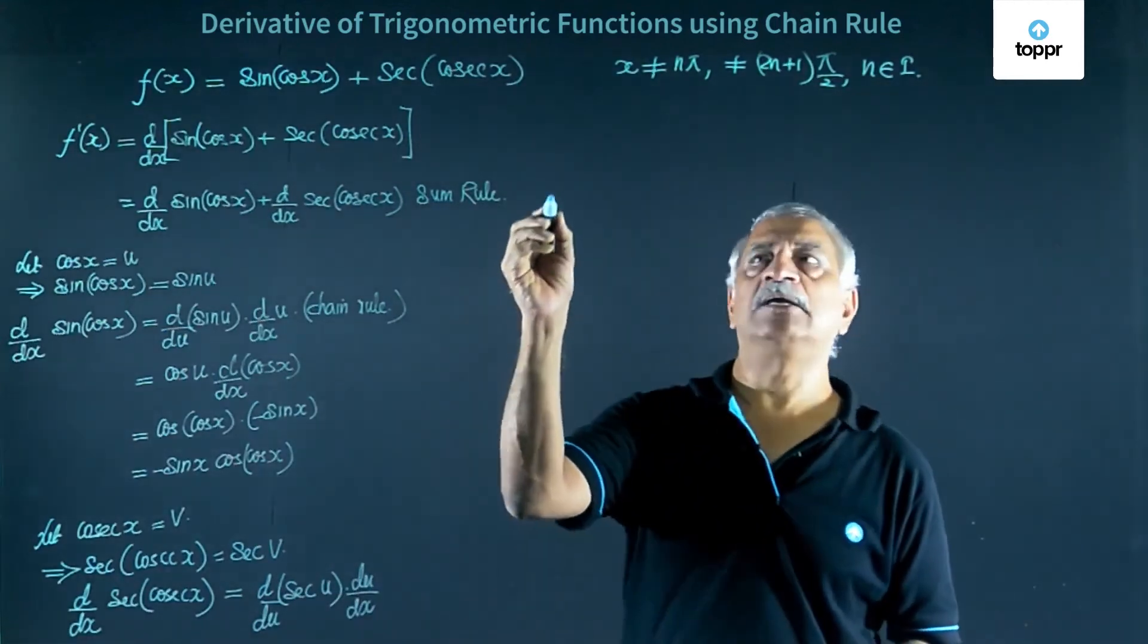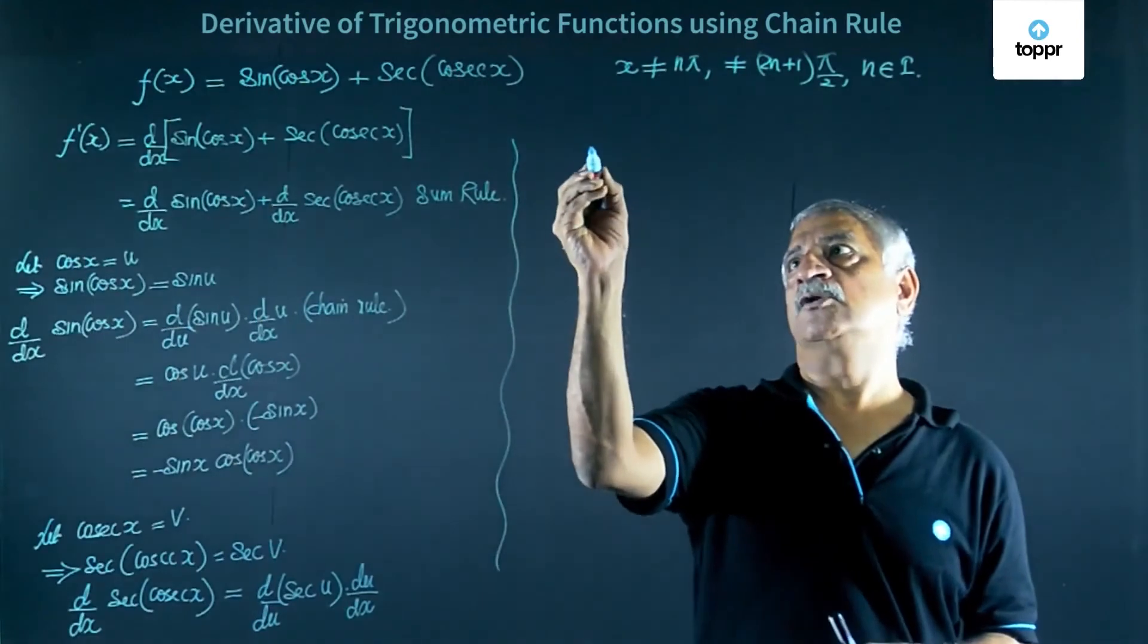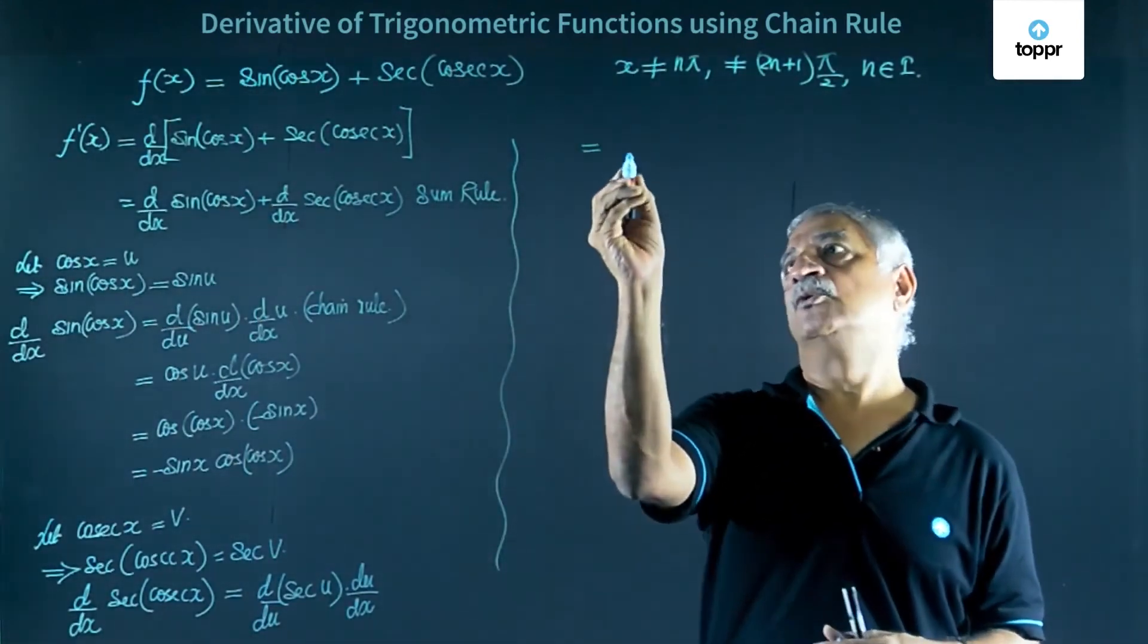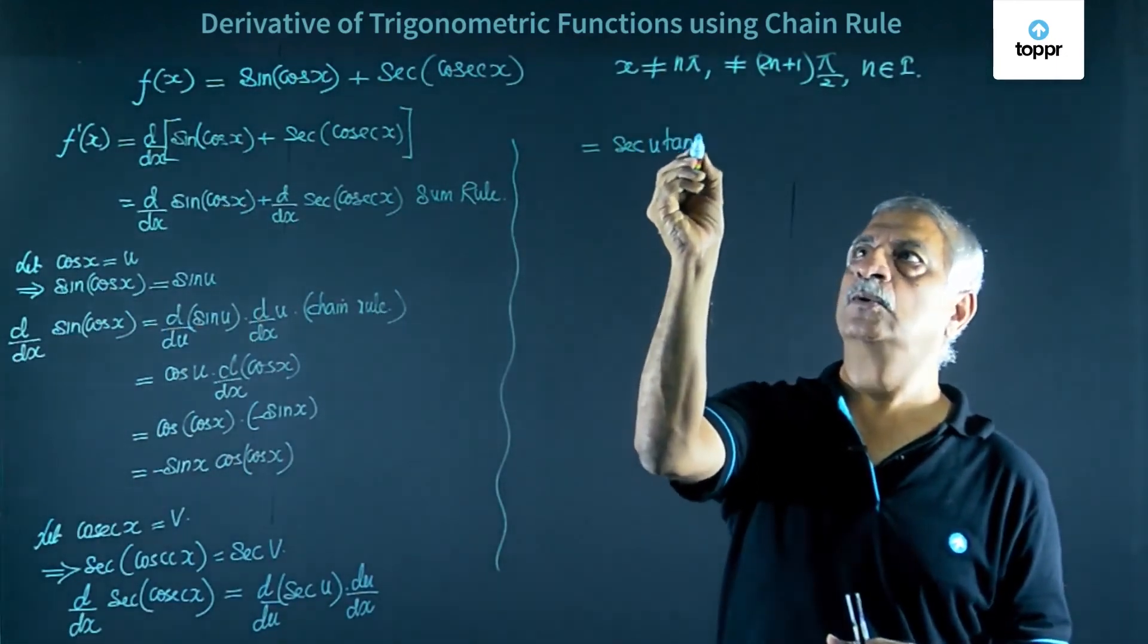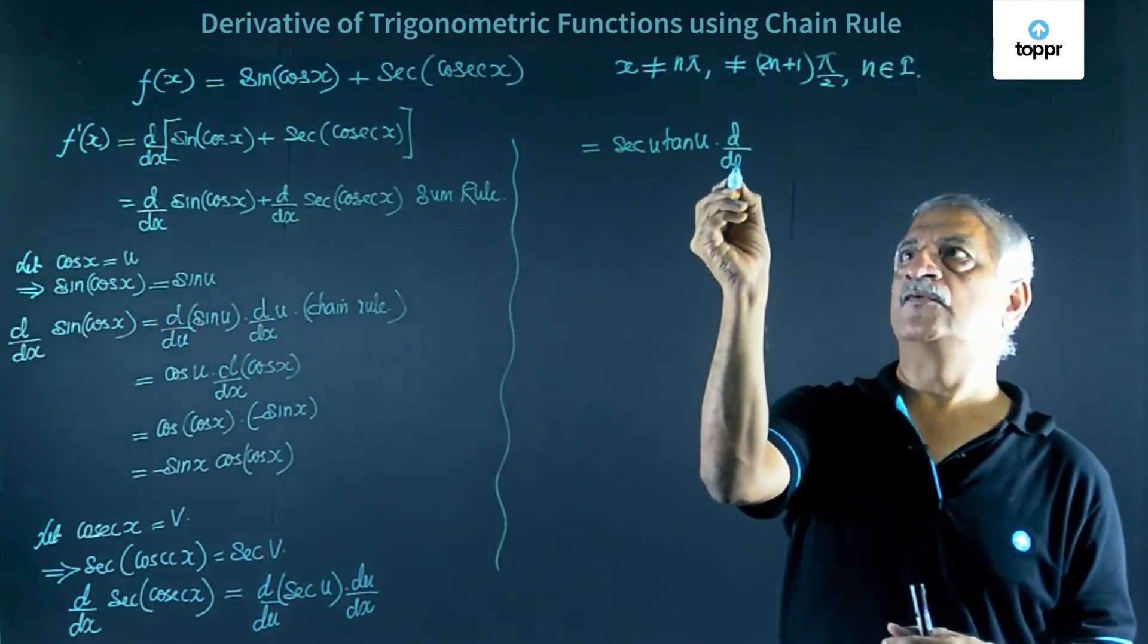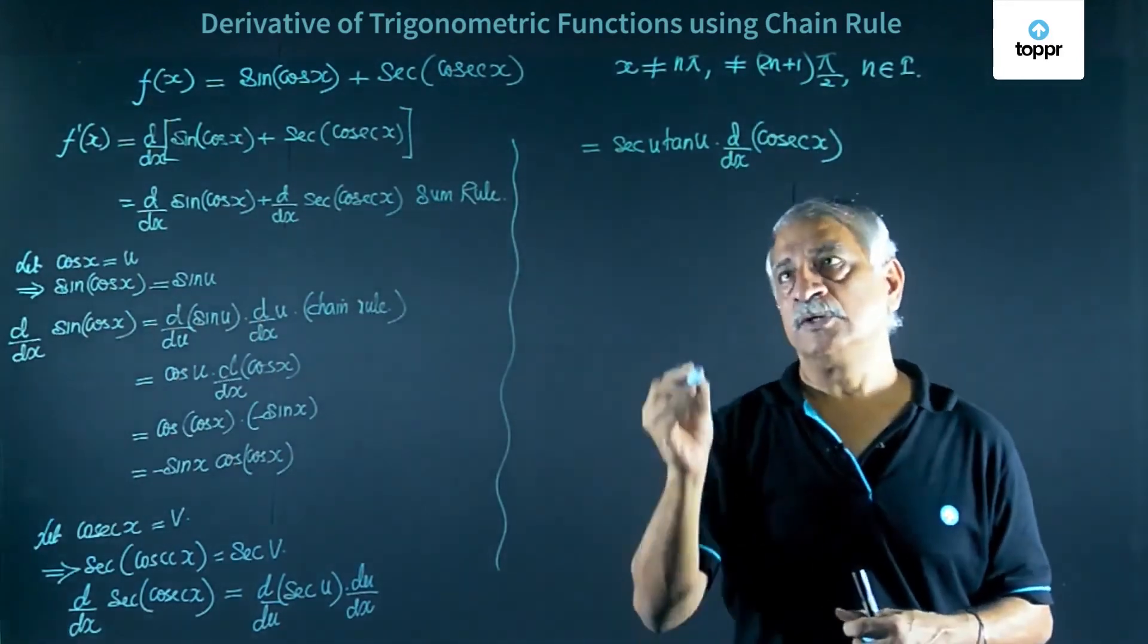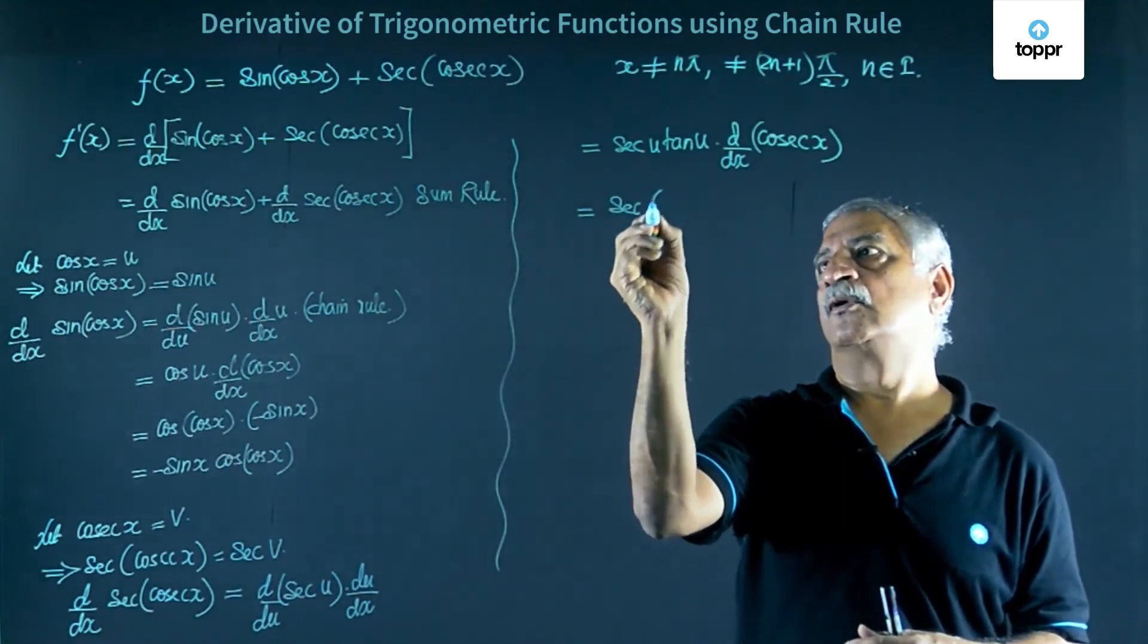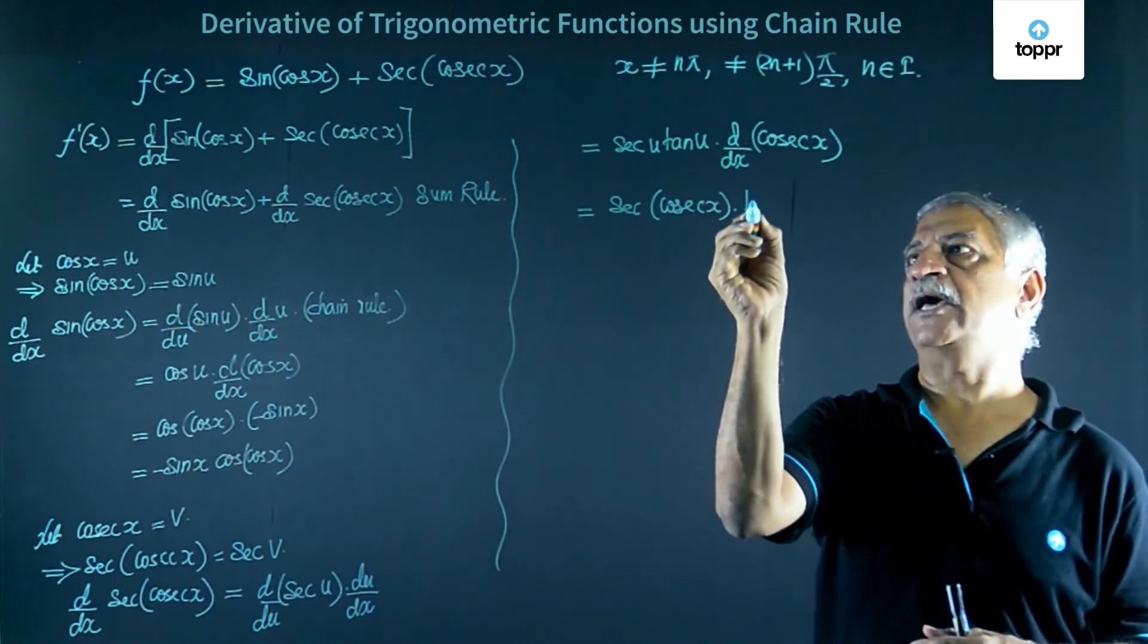Let us take it further and we get this is equal to d by dv of sec v is sec v tan v into d by dx of cos x.